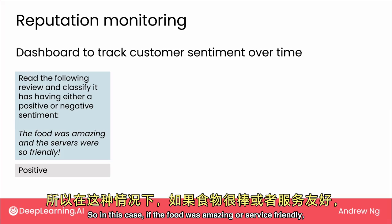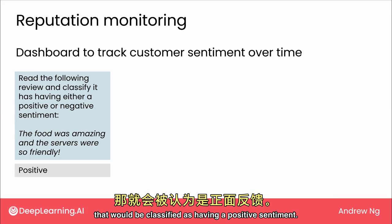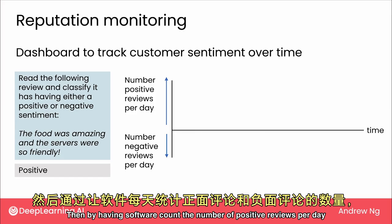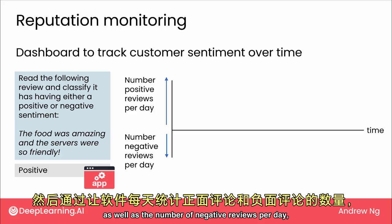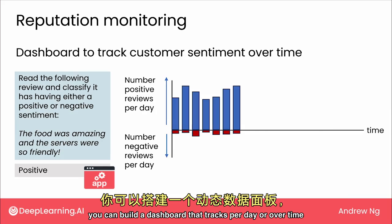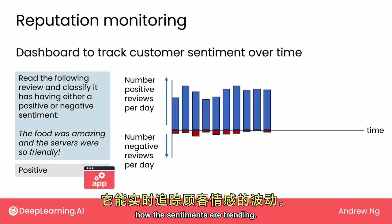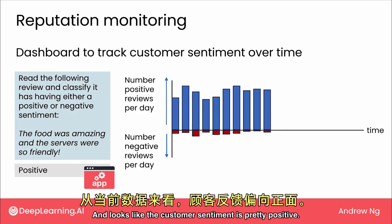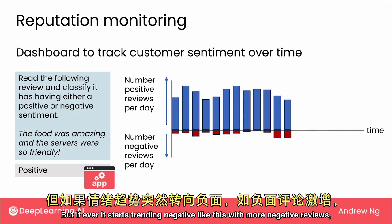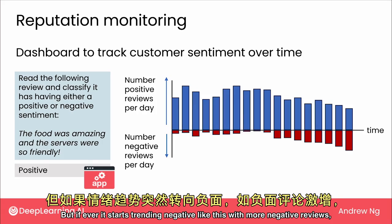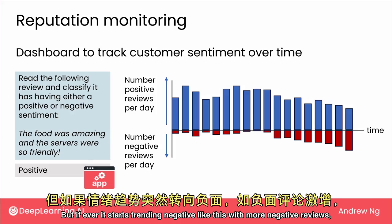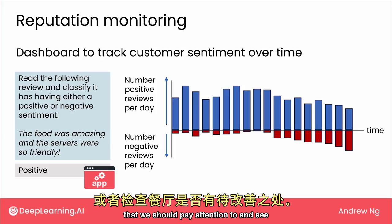So if the food was amazing or the service friendly, that would be classified as positive sentiment. By having software count the number of positive and negative reviews per day, you can build a dashboard that tracks sentiment trends over time. It looks like customer sentiment is pretty positive — but if it starts trending negative with more negative reviews, the dashboard can alert you that something may need attention at the restaurant.